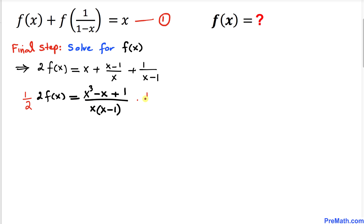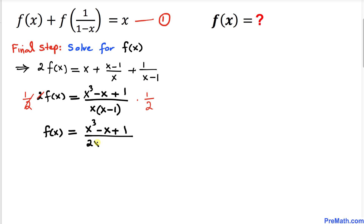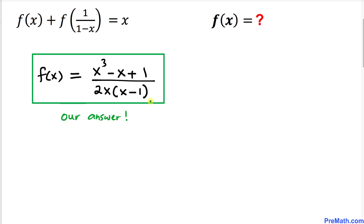Multiplying both sides by 1/2 to isolate f(x), we get our final answer: f(x) = (x³ - x + 1) / (2x(x-1)). Thanks for watching and please don't forget to subscribe to my channel for more exciting videos.